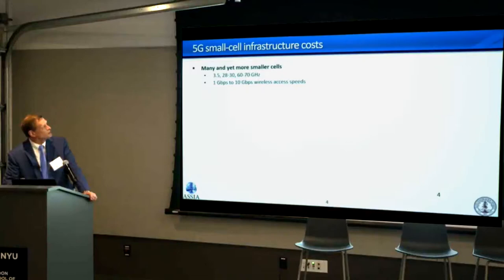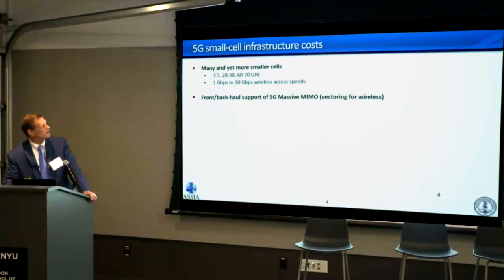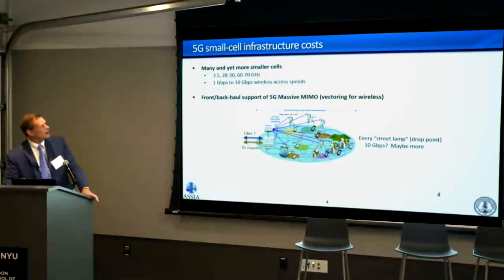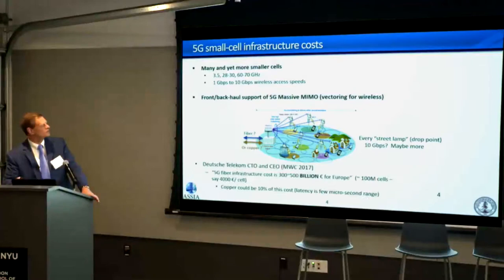The 5G structure involves many more cells, higher frequencies up into the millimeter wave band, and speeds of 1 to 10 gigabits per second being discussed — projected even in the new radio standard from 3GPP, especially in millimeter wave bands. For front and backhaul of 5G massive MIMO systems, you need a connection out to the cell tower. You could do it with fiber, but could it be done in some cases with copper as well?